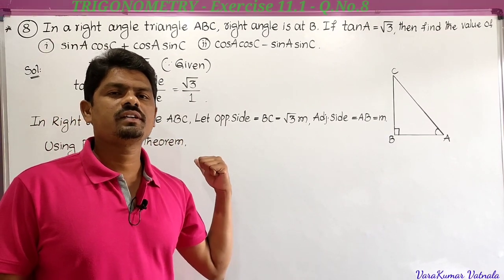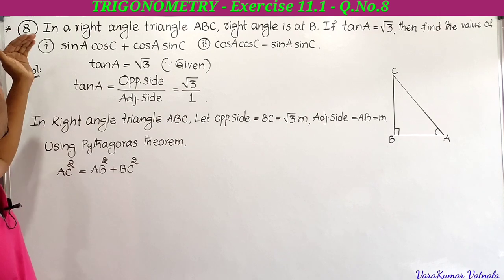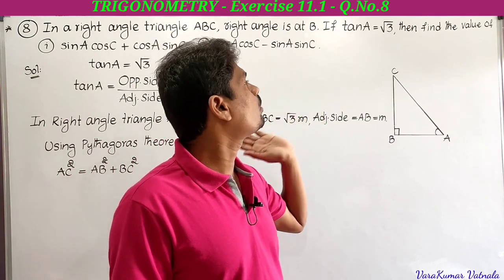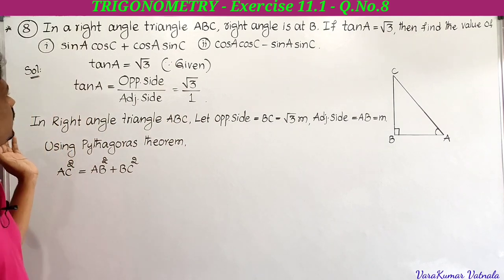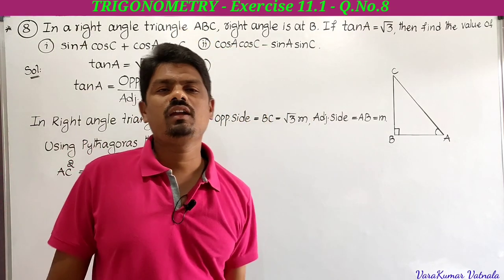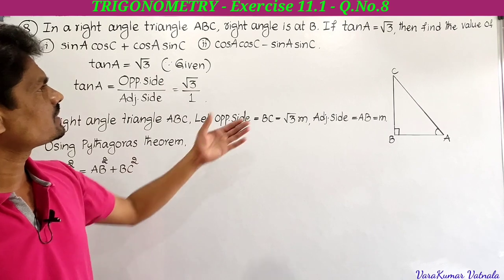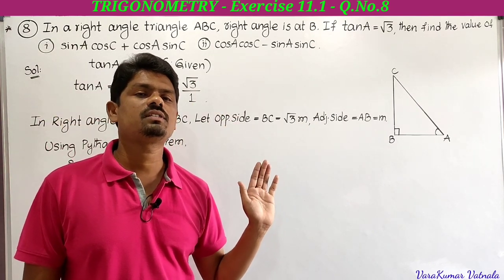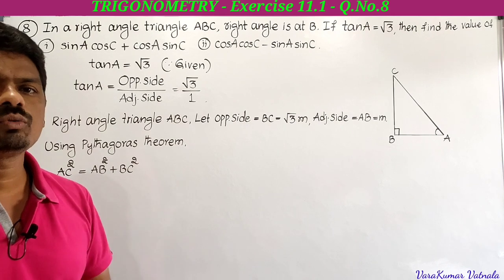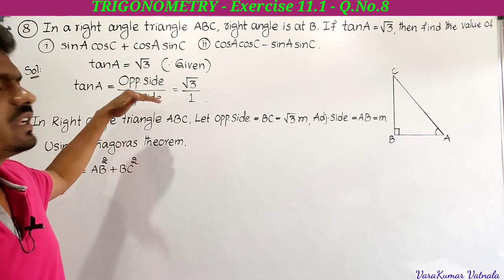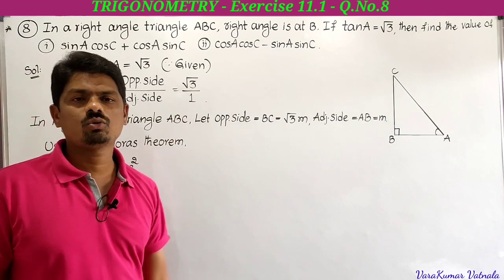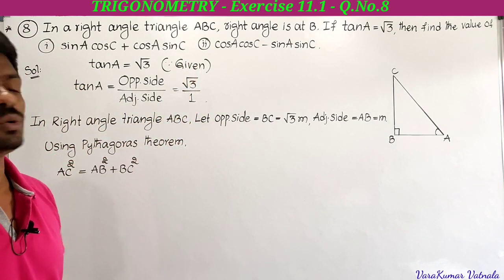Eighth problem in exercise 11.1: In a right angle triangle ABC, right angle at B, if tan A equals root 3, find the value of sin A cos C plus cos A sin C, and also cos A cos C minus sin A sin C. Tan A equals root 3, which can be written as root 3 by 1. Tan A equals opposite side by adjacent side, so opposite side BC equals root 3 times m and adjacent side AB equals m.